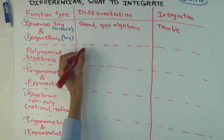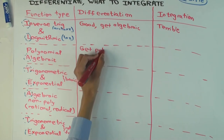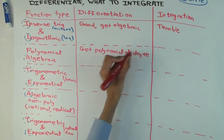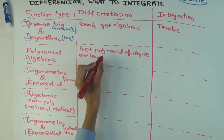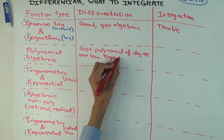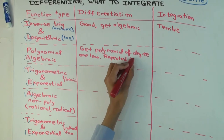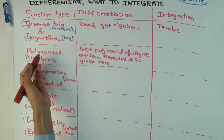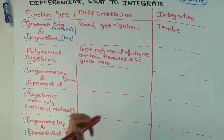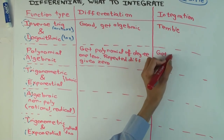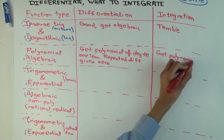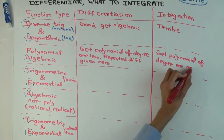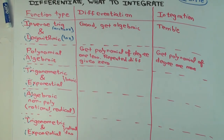Now what about polynomials? What happens when you differentiate polynomials? You get polynomials, and the degree goes down by one. If you do it sufficiently many times, you get a constant, and then zero. Repeated differentiation gives zero. For integration, you do get a polynomial, but of degree one more.